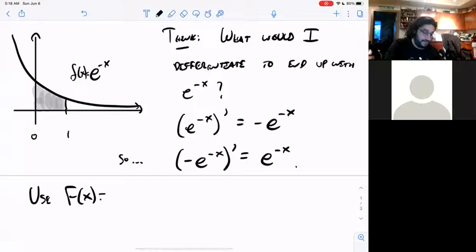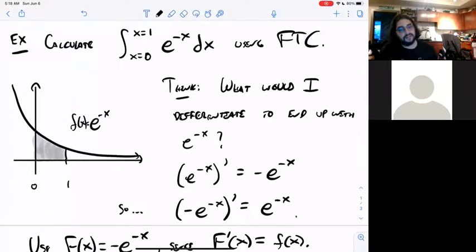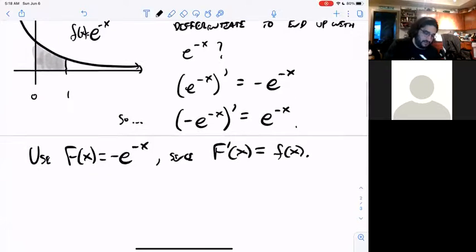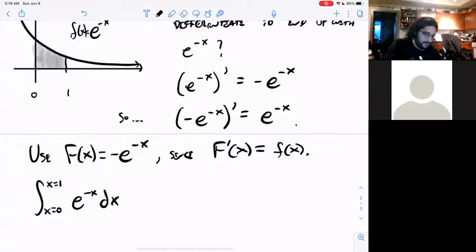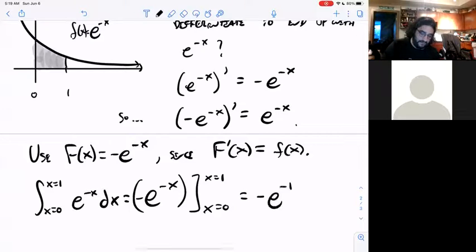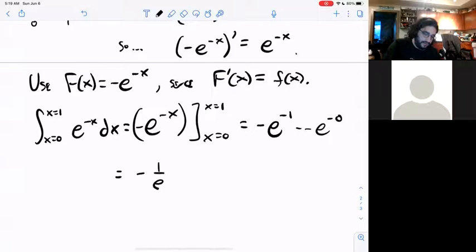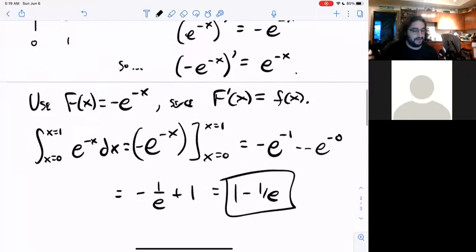So that tells me my antiderivative. So I can use big F is going to be negative e to the minus x. So then that's our antiderivative. The derivative of big F would equal little f. Now that I have big F, my antiderivative, I can calculate this integral in no time at all. So what does this become? It's the antiderivative, the negative e to the minus x evaluated between 0 and 1. So I have, I calculate this at 1, then I subtract and I calculate it at 0. So I get negative 1 over e plus 1. 1 minus 1 over e. That's the area of that gray region.